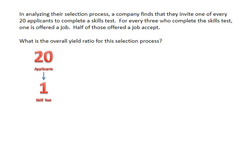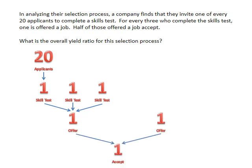Then you add your second ratio, which is for every three who complete the skills test, one is offered a job. Lastly, you need to insert your final ratio, which is half of those offered a job accept.